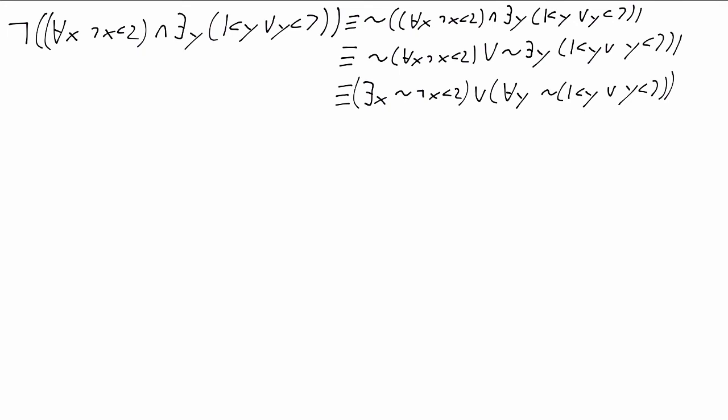Finally, the double negation cancels, the or flips to an and, and we're left with exists x, x is less than 2, or for all y, not 1 less than y and not y less than 7, and this is in negation normal form. The remaining negations stay where they are, because they're now negations of atomic formulas. So we took that original formula and converted it to one in negation normal form, and we can always do this.